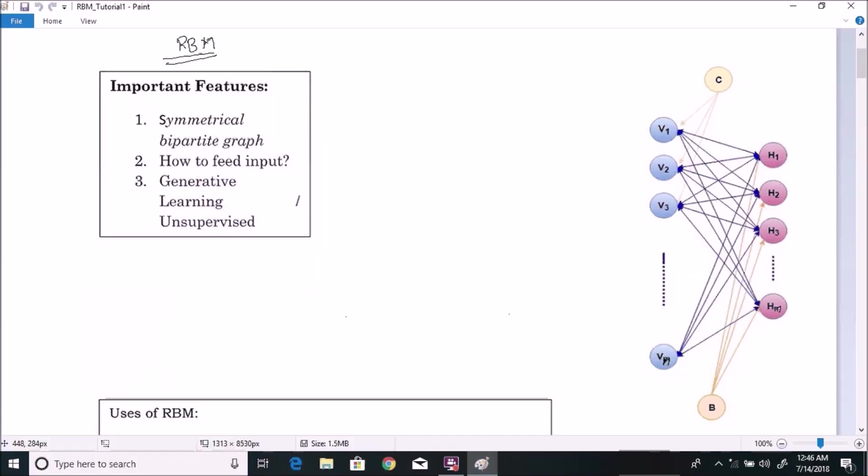So let us start. In this part, first of all, we will go through some basic overview of Restricted Boltzmann Machine. Actually, Restricted Boltzmann Machine contains only two layers: visible layers and hidden layer. Visible layer contains input nodes.